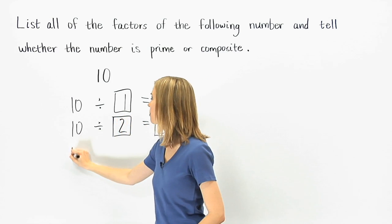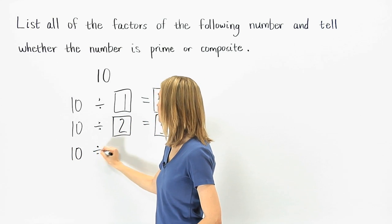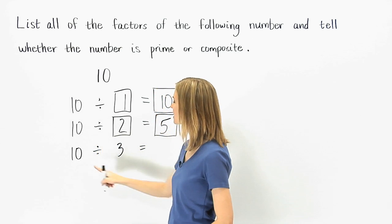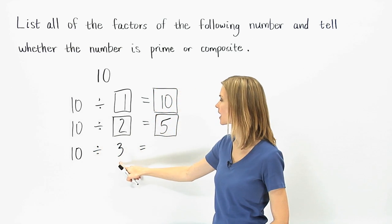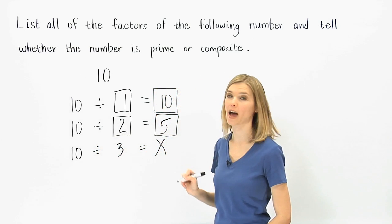This means that 2 and 5 are factors. Next, divide 10 by 3. But notice that 10 doesn't divide by 3 evenly, so 3 is not a factor.